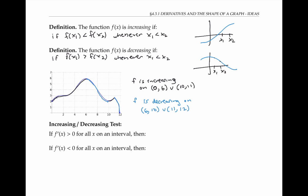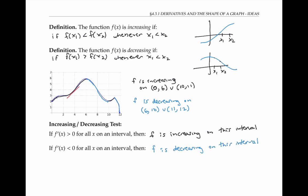The first derivative of f can tell us where the function is increasing and decreasing. In particular, if f prime of x is greater than zero for all x on an interval, then f is increasing on this interval. This makes sense because f prime being greater than zero means the tangent line has positive slope. Similarly, if f prime of x is less than zero for all x in an interval, then f is decreasing on this interval, because a negative derivative means the tangent line has a negative slope.